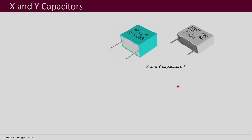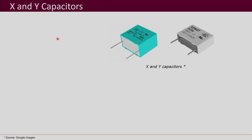Another component very much used for EMI filters is the X and Y capacitor. What are these X capacitors and Y capacitors? You know there are different types of capacitors — electrolytic, film capacitors, ceramic capacitors and so forth. X capacitors are the ones which are used for filtering of differential mode voltages and currents.